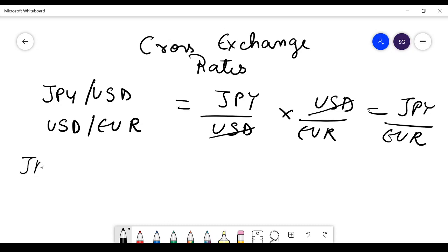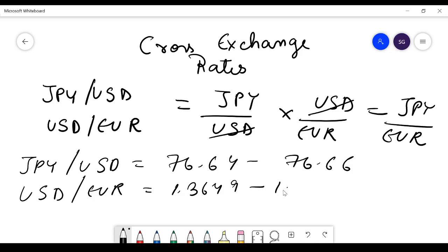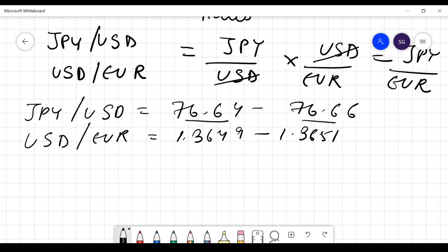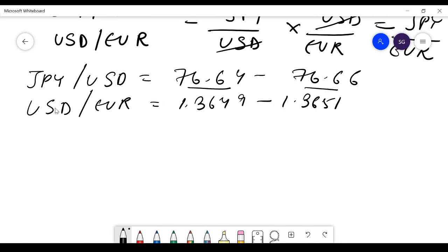So this is the bid rate and this is the ask rate. Bid rate is the buying rate and ask rate is the selling rate. You can remember this by remembering that B B both have to be, so bid is equal to buy. Buying rate means...